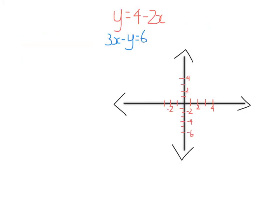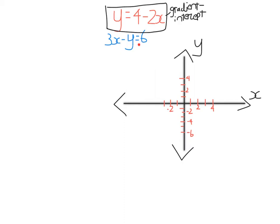So let's say I want to graph these two lines here on the Cartesian plane. Remember, the y-axis is the vertical axis and the x-axis is horizontal. There were two methods of graphing we learned earlier in the year. When it's in the form y equals something, we use the gradient intercept method. And when we have an equation that's not in the form y equals, we use the xy intercept method.